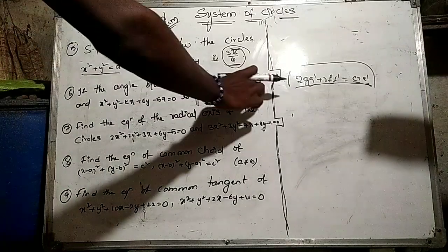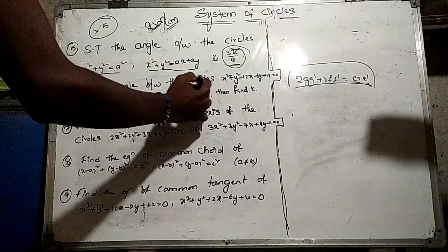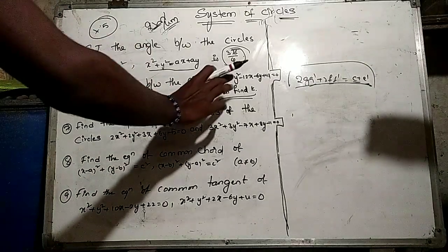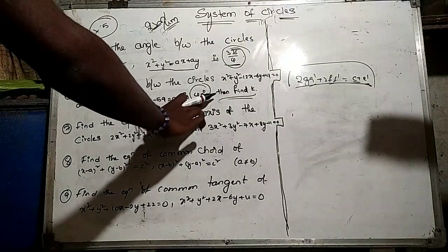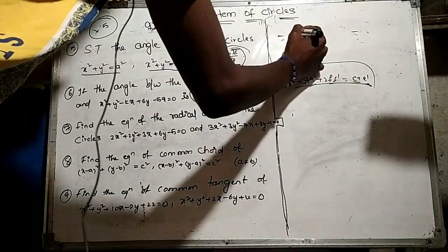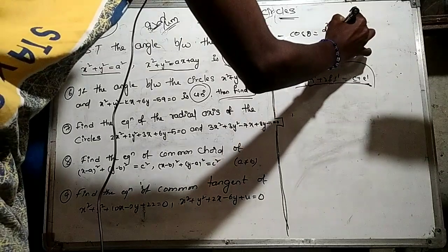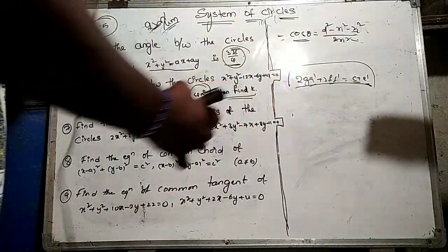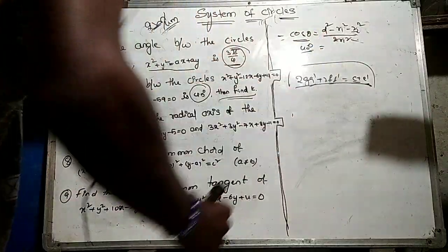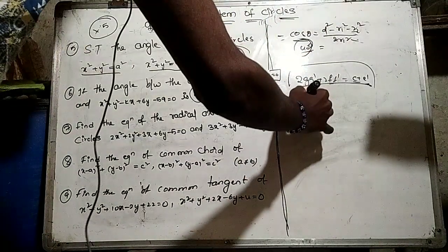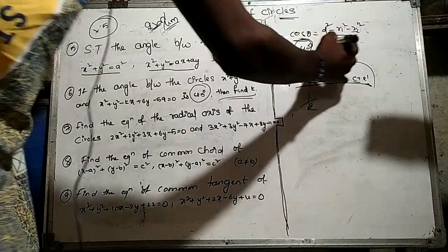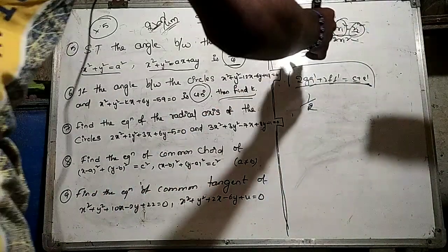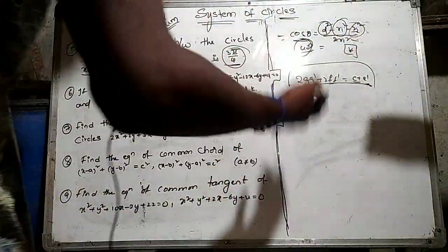If the angle between the circles is 45 degrees, then find k. We have direct questions. We need to find the angle using the formula cos theta equals d squared minus r1 squared minus r2 squared by 2r1 into r2. We substitute 45 degrees for theta and solve for the k value.